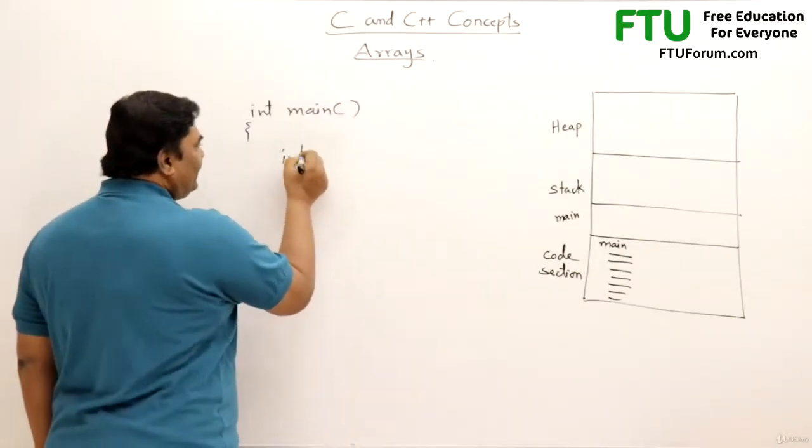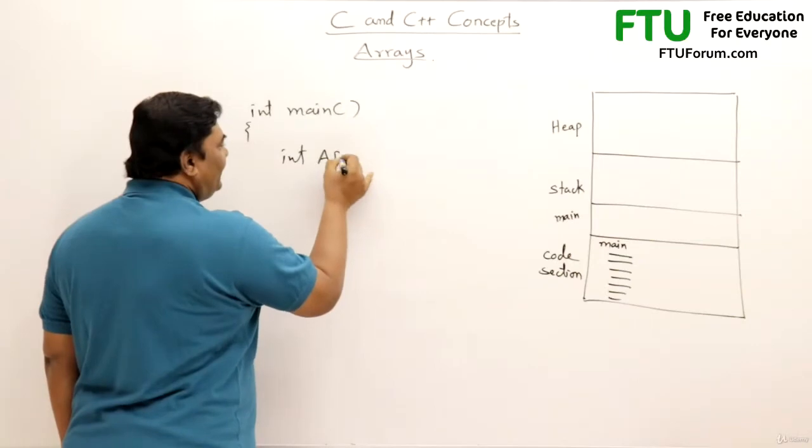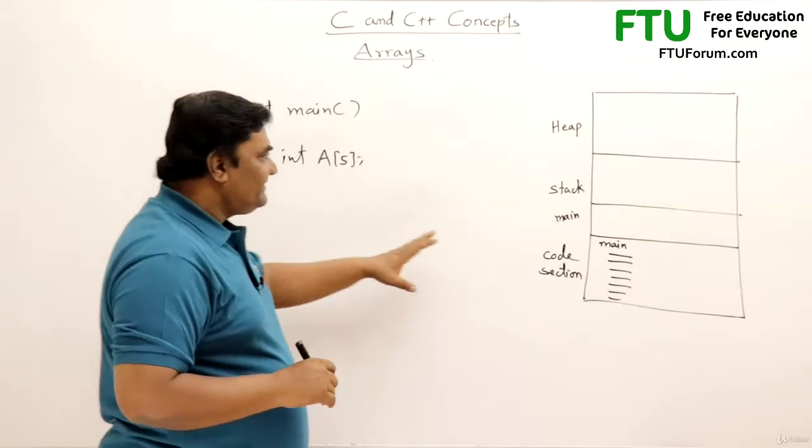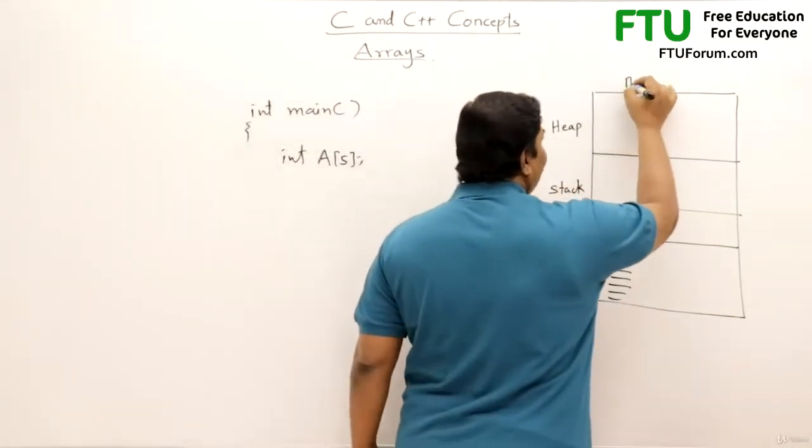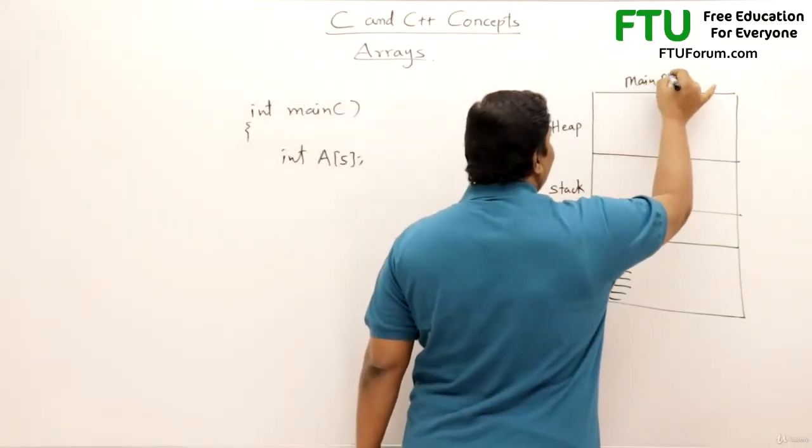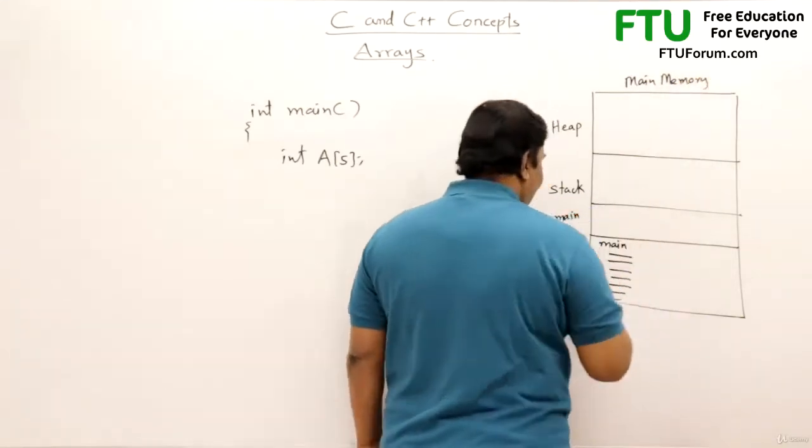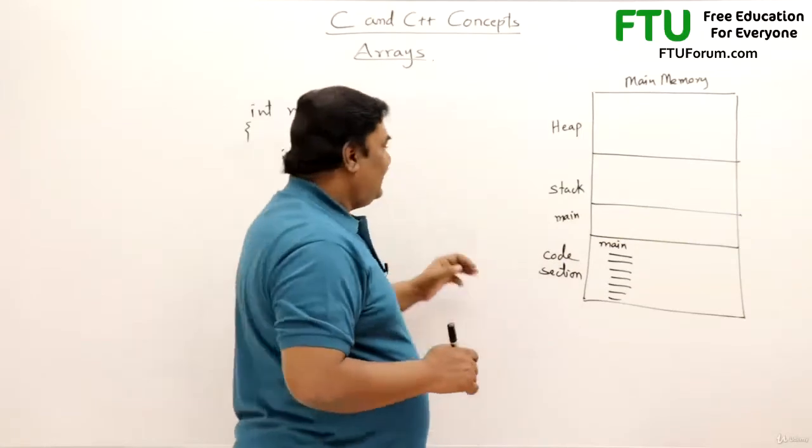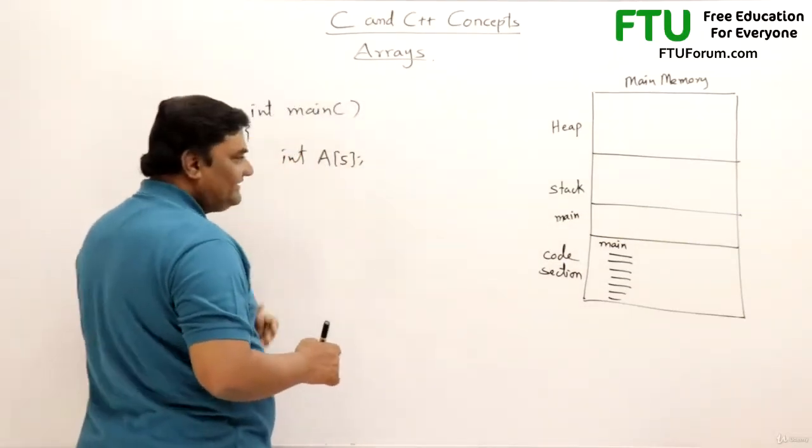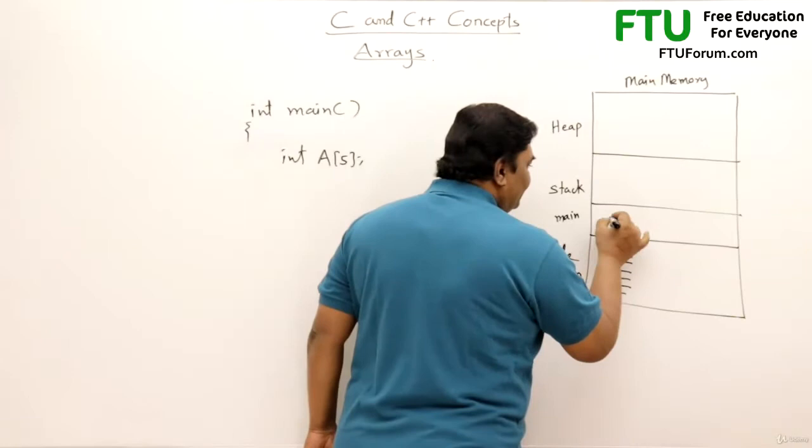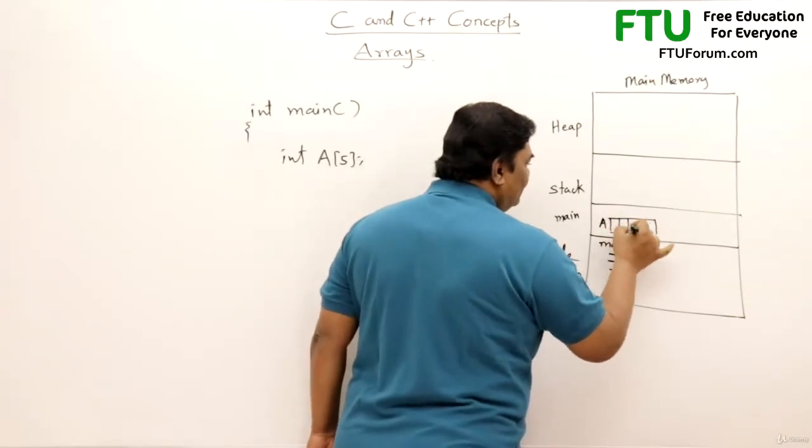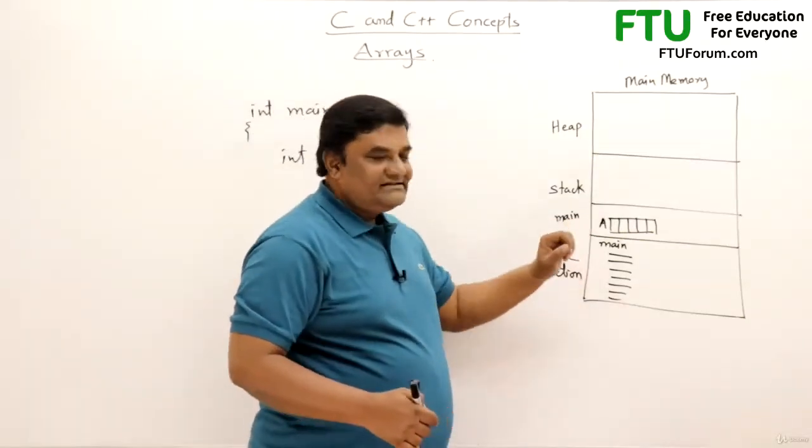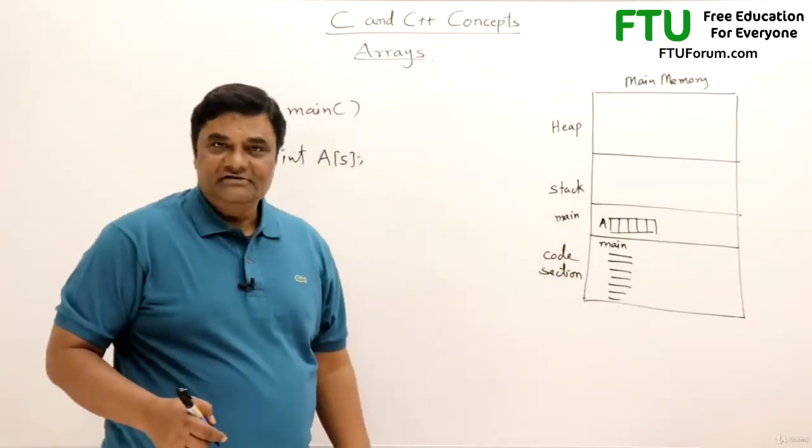Now suppose I want to declare an array A of size 5 and array of size 5 will be created. Now when the program is running it runs inside the main memory. This is main memory and the main memory is divided into 3 sections, that is code section and stack and heap. When any variable is declared, like an array is declared, that array will be created here inside the stack. This is where the array will be created and that array will be directly accessible to the main function.